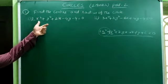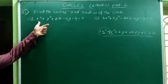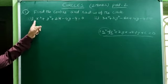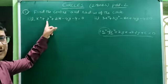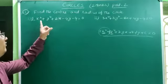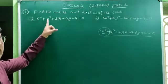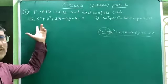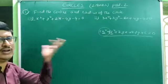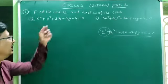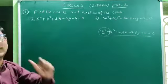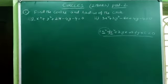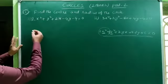If you look at this first problem, the x² coefficient is clearly 1 and the y² coefficient is clearly 1. So coefficients of x² and y² are both equal to 1. Therefore, we can find the center and radius of the given circle.